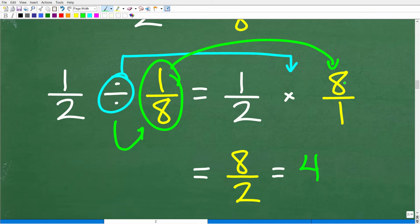OK, so we can go from division to multiplication by flipping the fraction to the right of the division operator. So now this is one half times eight over one. OK, so we went from a division problem to a multiplication problem. And we, of course, are talking about fractions here. So how do we multiply fractions?